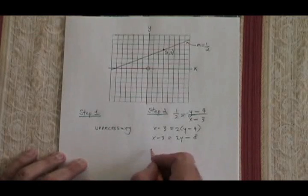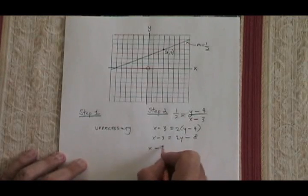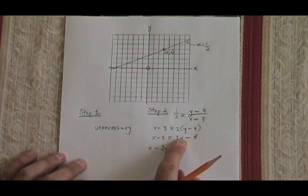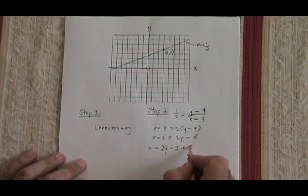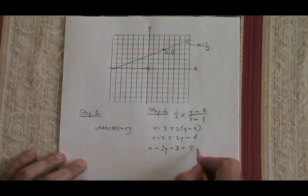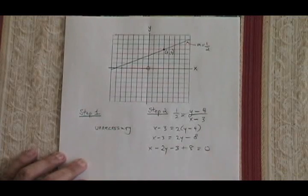And now I move everything to the left. x first, then minus 2y. The 2y changed signs because it changed sides. Then I put the minus 3, and then I put plus 8. The 8 also changed signs. Don't forget the equals 0.